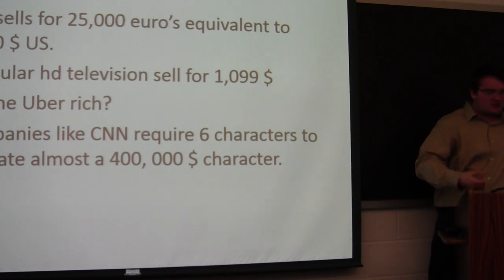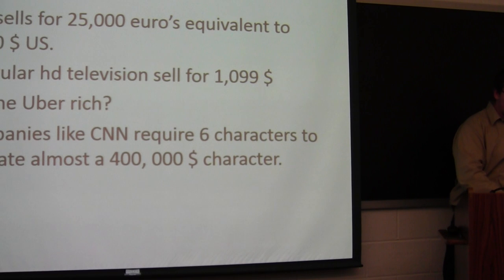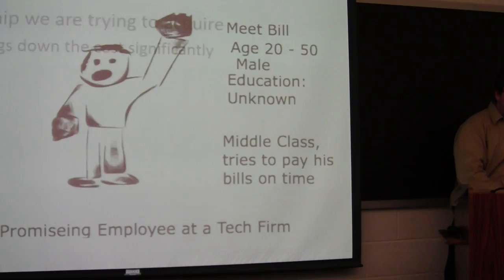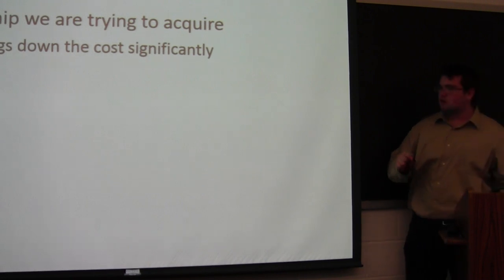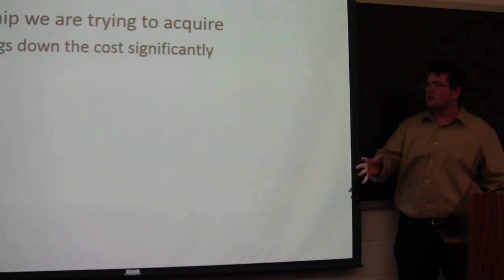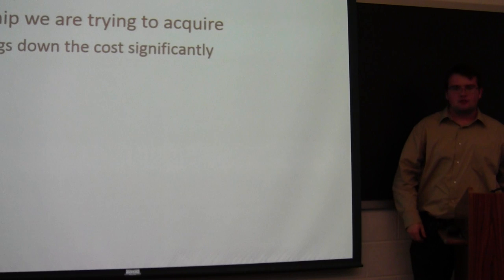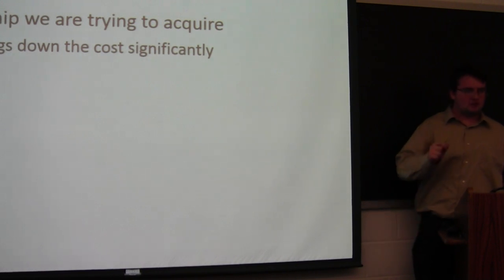In fact, when it comes to companies like CNN, they require six cameras that generate an almost $400,000 character. So, this goes back to MIT. We are going back to MIT because their chip will drastically bring down the cost to holographic TVs. That is why we are so dead set on getting this chip.